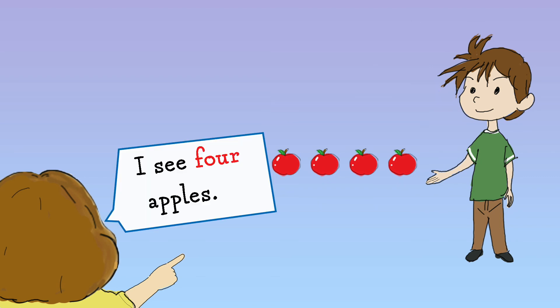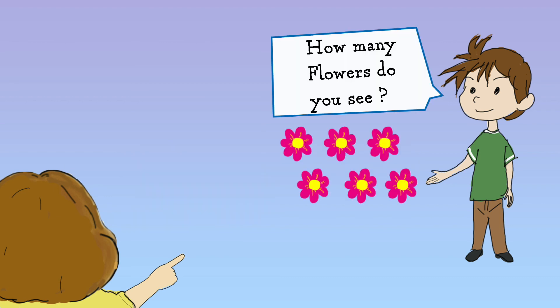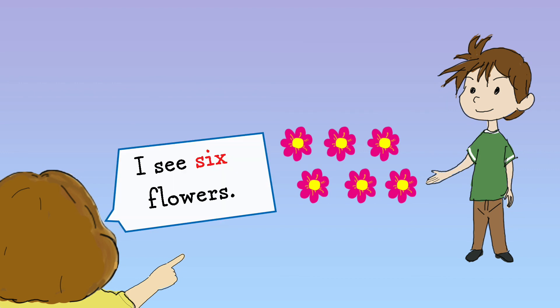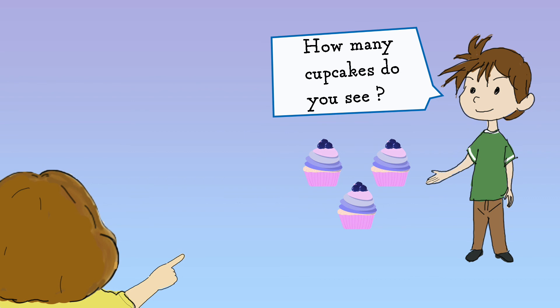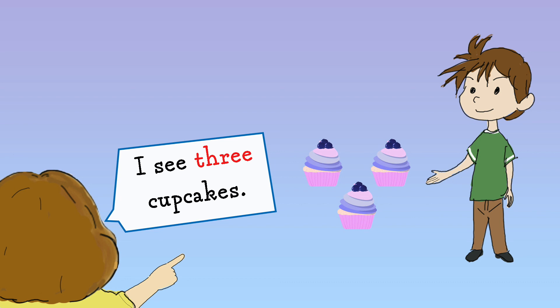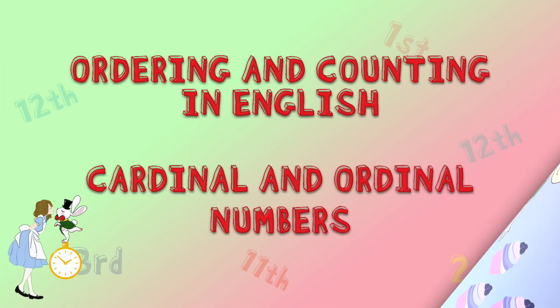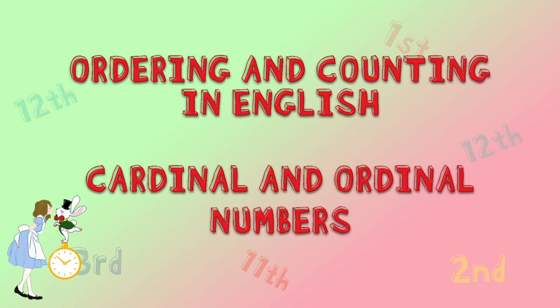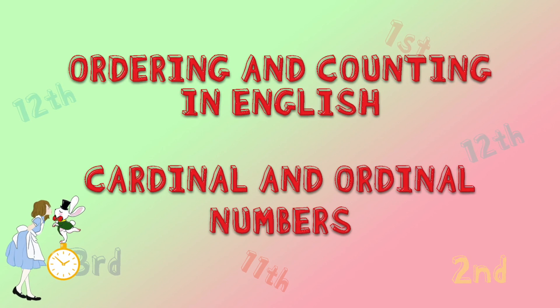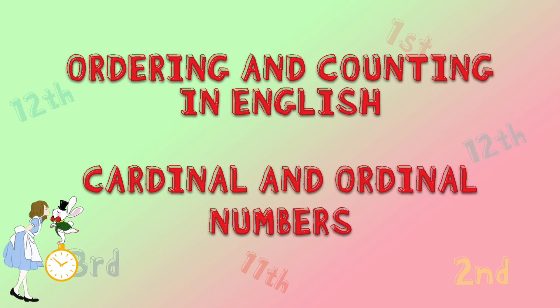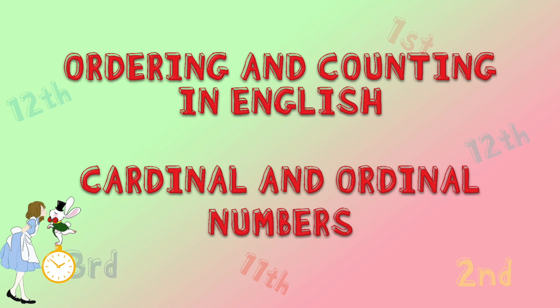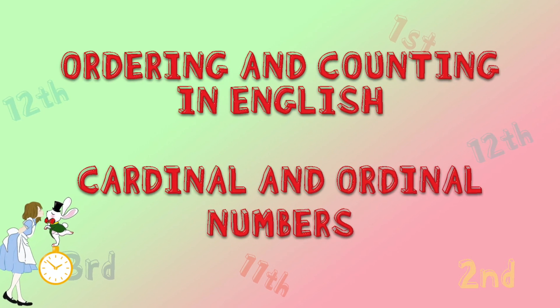I see 4 apples. How many flowers do you see? I see 6 flowers. How many cupcakes do you see? I see 3 cupcakes. So remember, we use cardinal numbers to count things and we use ordinal numbers to indicate where something is in a series.